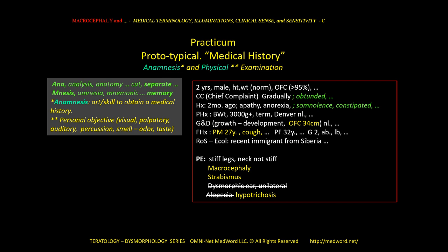For this practicum, we also have a chance to look at a prototypical medical history. A medical history classically includes an anamnesis — a term worth keeping in mind. Anamnesis comes from a root meaning cutting or separating, like in analysis or anatomy. Anamnesis means cutting memories from what the patient can tell us. If a patient has amnesia, there is no anamnesis. Mnemonic is a device to remember. Anamnesis, then, is the art or skill to obtain a medical history.